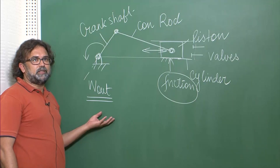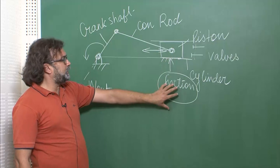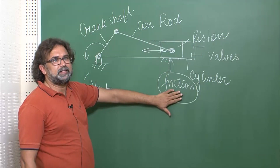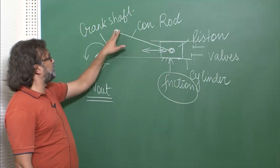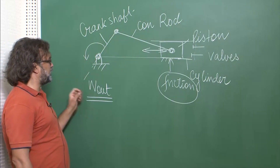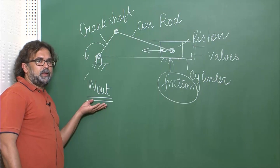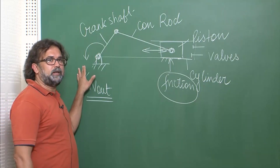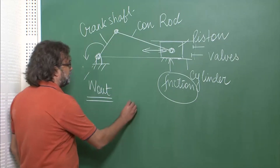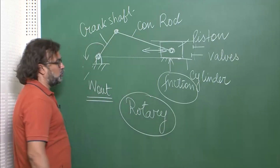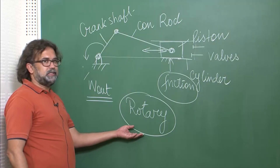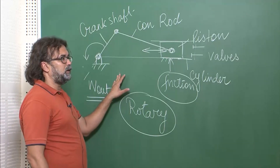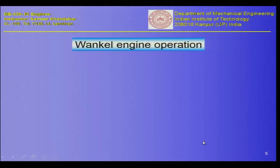We know that rotary friction is usually much less than reciprocatory friction, and whenever there is friction, part of the heat which we have converted to work gets wasted. So, what we get as W out is actually a little less because frictions have to be overcome. This led people to think: why not have a rotary engine? Let us see a rotary engine in which these frictions will be less. One of the earlier designs of a rotary engine is called the Wankel engine.